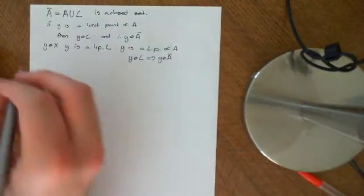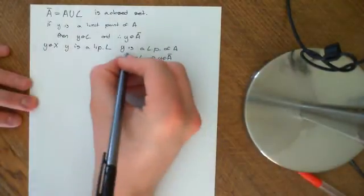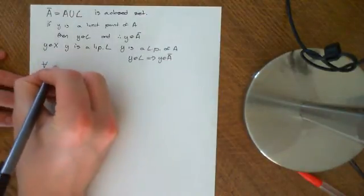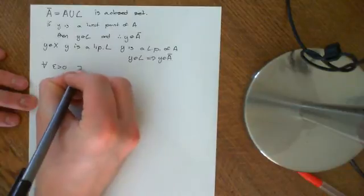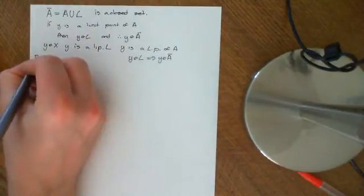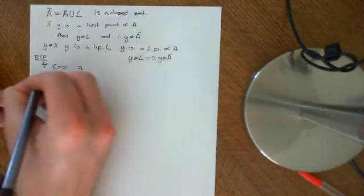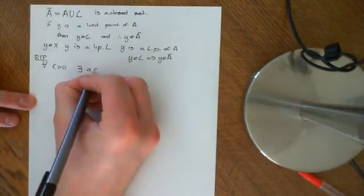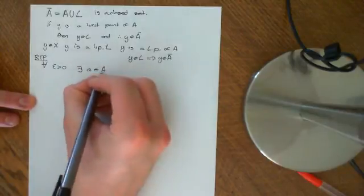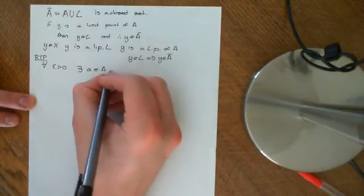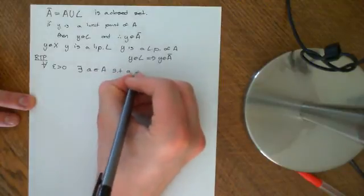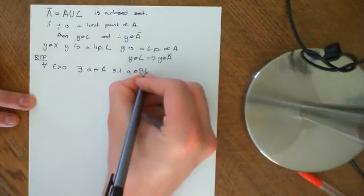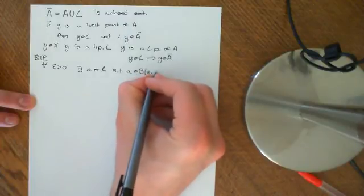So what we want to prove is that Y is a limit point of A. We want to prove that for all epsilon greater than 0, there exists a little a which is an element of big A, such that little a is an element of the ball centred around Y of radius epsilon.